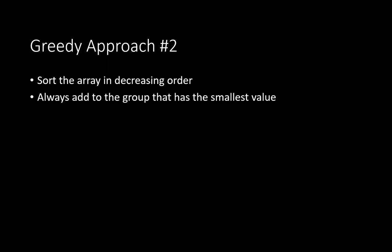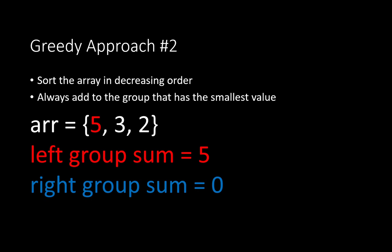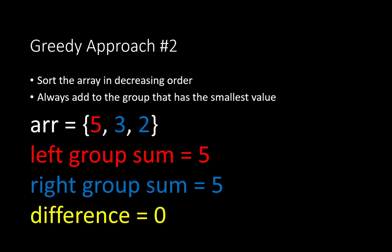Now the second approach is to first sort the array in decreasing order — from the highest weight apple to the lowest — and then follow the same strategy. So sorting our array gives us 5, 3, and 2. We add 5 to the left group by default, then 3 to the right group because 5 is greater than 0, and 2 to the right group again because 3 is smaller than 5. This gives us the optimal solution with a difference of 0. But in reality, this strategy will fail as well.